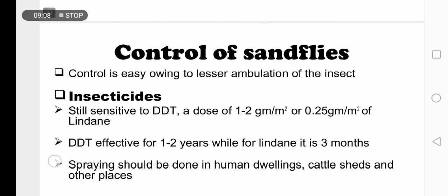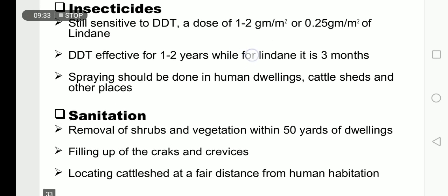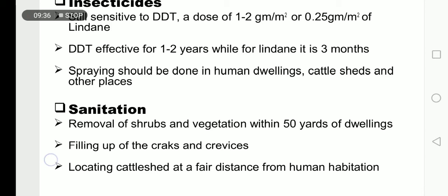Control of sand fly: insecticides can be used. DDT at a dose of 1 to 2 grams per square meter can be applied; 0.25 grams per square meter of Dieldrin. DDT remains effective for one to two years, while Dieldrin is effective for three months. Spraying should be done in DDT-treated areas. Sanitation: shrubs near residential areas should be cleared within 50 yards. Locate cattle sheds at a fair distance from human habitation.